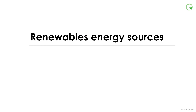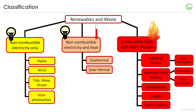Now I'm going to move on to renewable energy sources. Renewables and waste can be classified into three groups. The first group is renewable energy with a primary energy form of only electricity — this includes hydro, wind, ocean, and solar PV. The second group is renewable energy which can produce both heat and electricity, with a primary energy form of heat — this is composed of geothermal and solar thermal. And the last group is combustible fuels, which can be stocked or traded.